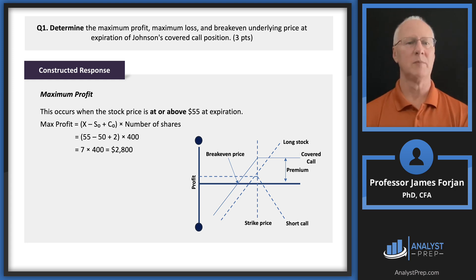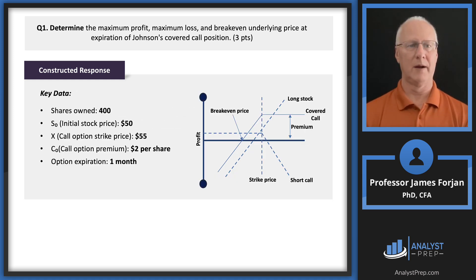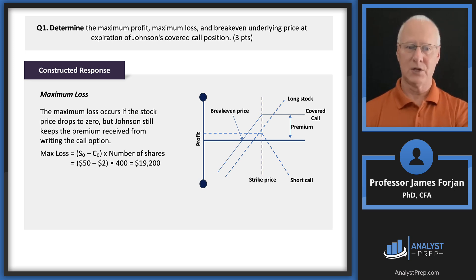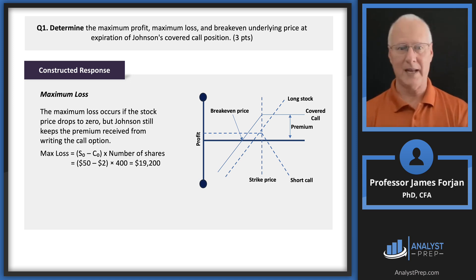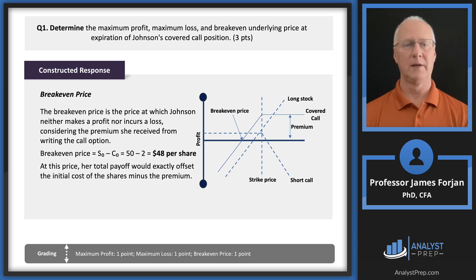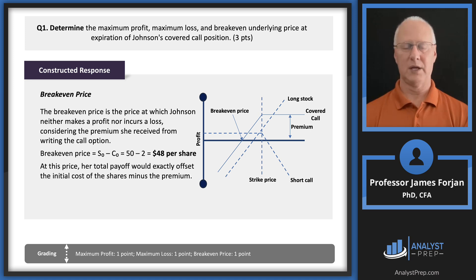Maximum loss: we bought 400 shares at $50, so that's $20,000. The worst we can do if we own the share of stock is lose $20,000, but we wrote the option and got $2 times 400, so that's $800. So the most we can lose, if the stock price falls to zero, is $20,000 minus the $800 we received from writing the option — that gives us $19,200. And then the break-even point: just take the current stock price of $50 and subtract the $2 option premium. So you get $48 a share.